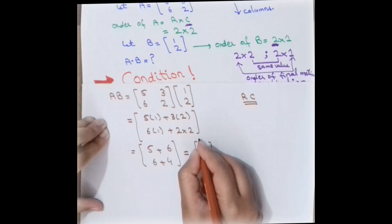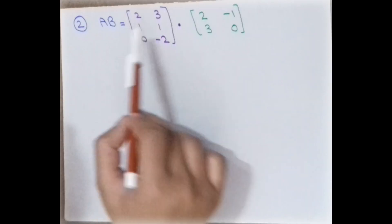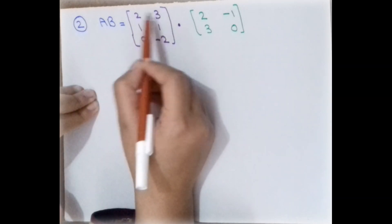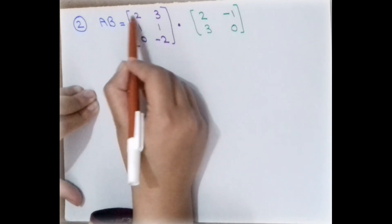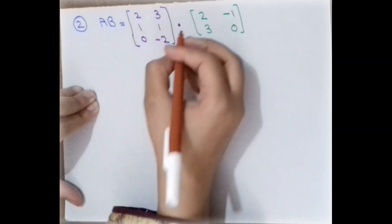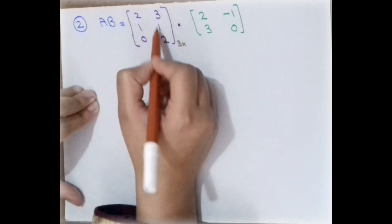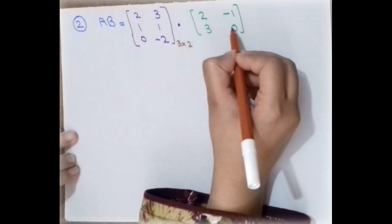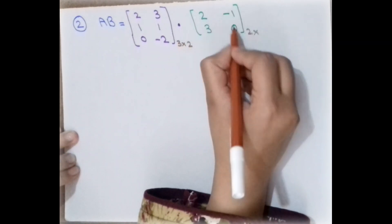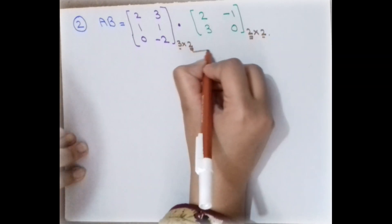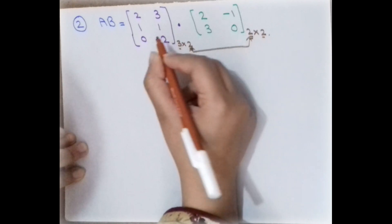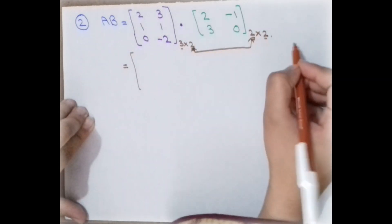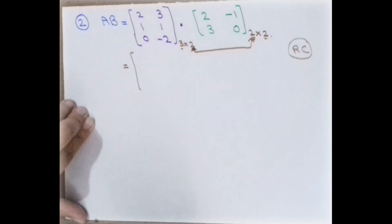Now we have to multiply two new matrices. First check the order: the order is row by column. The first matrix has 3 rows and 2 columns, and the second matrix has 2 rows and 2 columns. Since the columns of the first matrix equal the rows of the second matrix, multiplication is possible. Always remember the RC rule: multiply row with column.